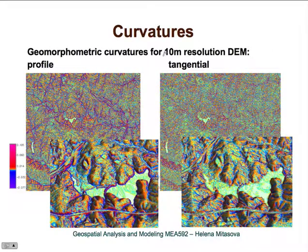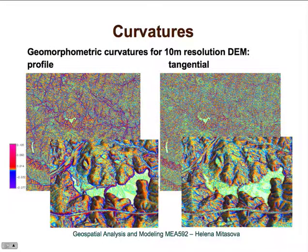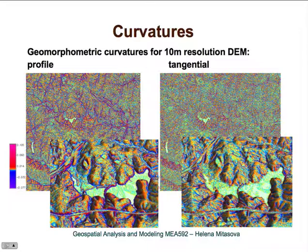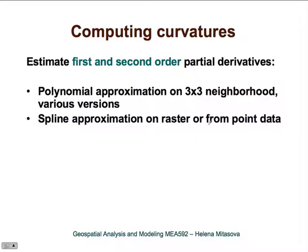Curvatures derived from a 10-meter resolution DEM from LiDAR data have very rich, complex structure—when viewed at small scale it looks very noisy. Zooming in, profile curvature shows convex ridges and concave valleys, and you can see the surface transition from convex to concave as topography meets the lake surface. Tangential curvature again shows convex ridges and also picks up small valleys very nicely.